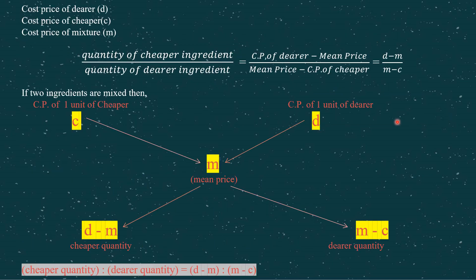Now let us derive the formula. The cost price of the dearer ingredient will be called D, the cost price of the cheaper ingredient will be called C, and the cost price of the mixture — the mean price — will be denoted by M. On the diagram, we write C for the cheaper ingredient on one side and D for the dearer ingredient on the other side, with M in the middle. Below C we write the quantity of the cheaper ingredient, and below D we write the quantity of the dearer ingredient.